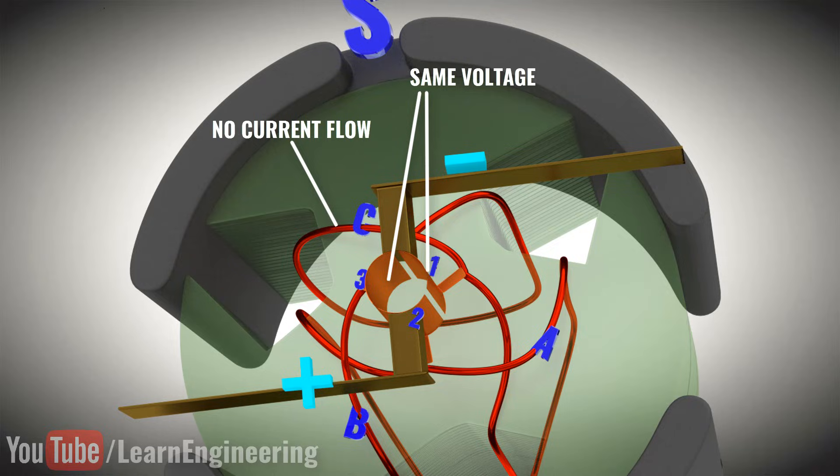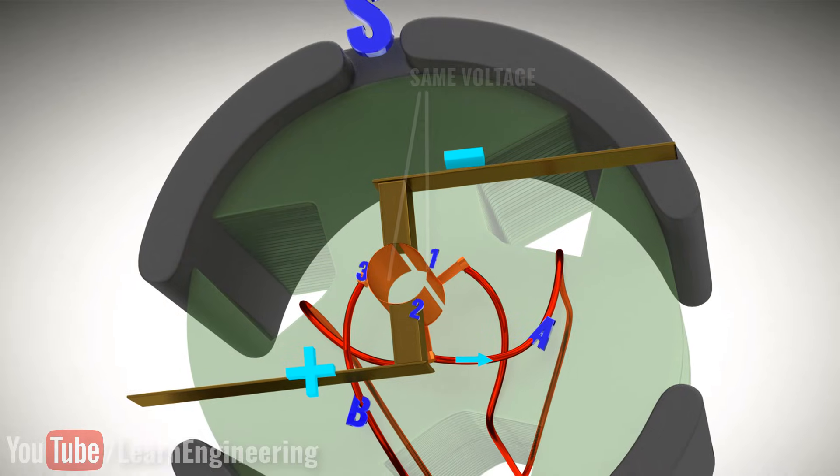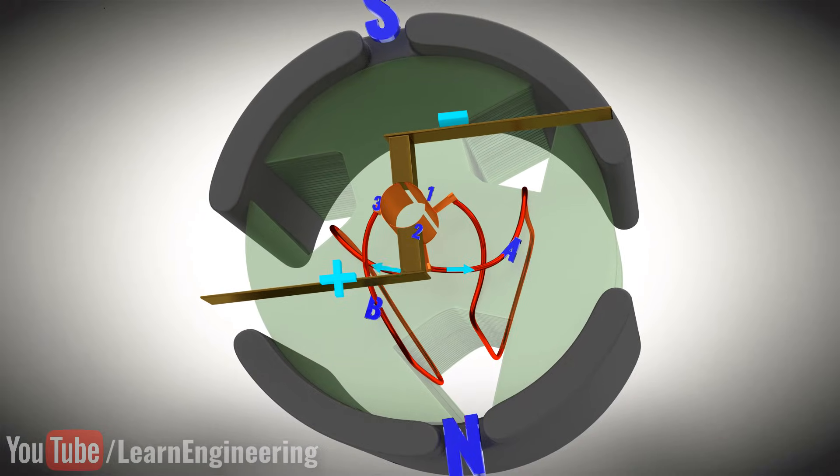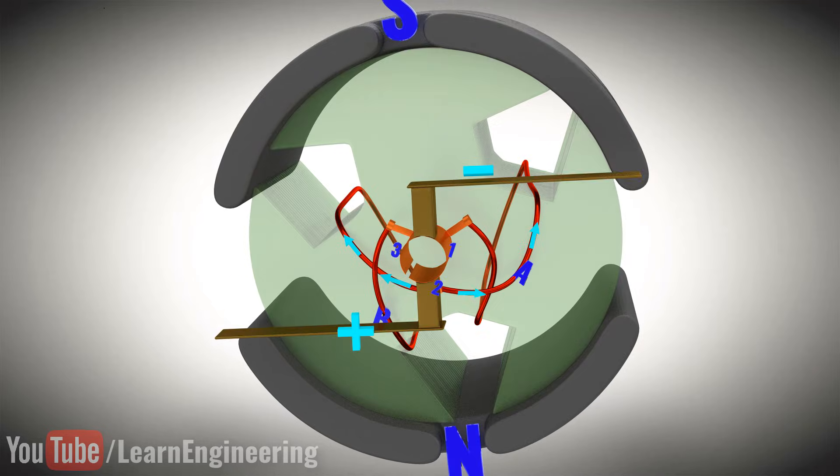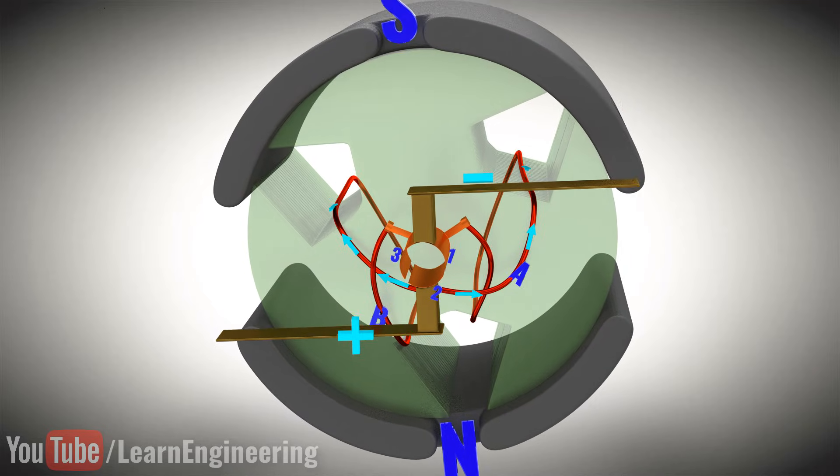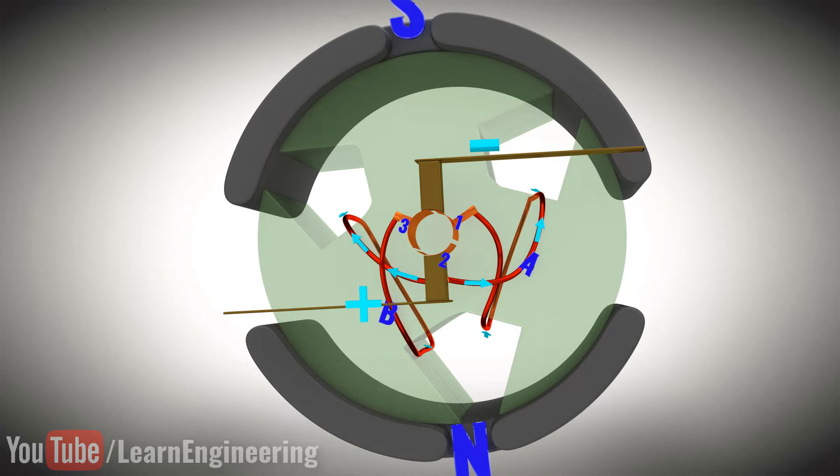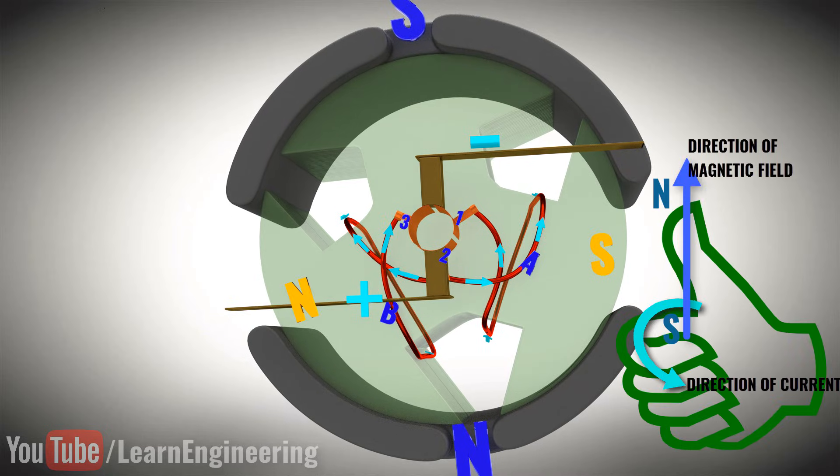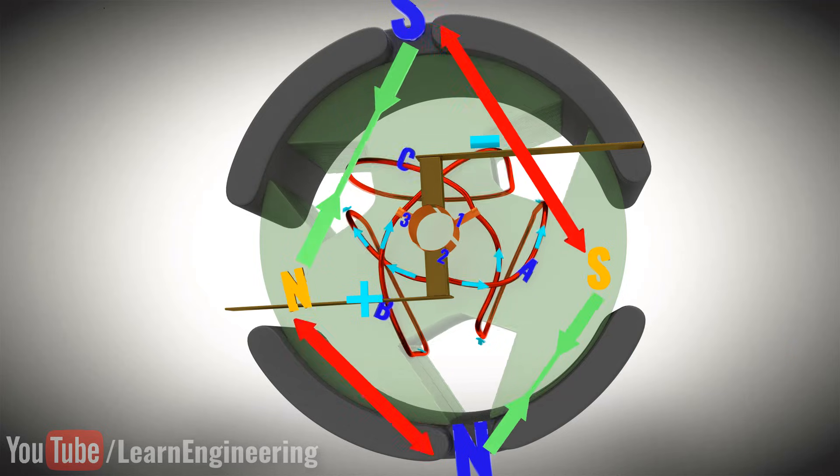Let's omit this coil. Current flow occurs in the remaining two coils as shown. Here, coil A acts as the south pole, whereas coil B acts like the north pole. Due to the forces of attraction and repulsion, the rotor will turn.